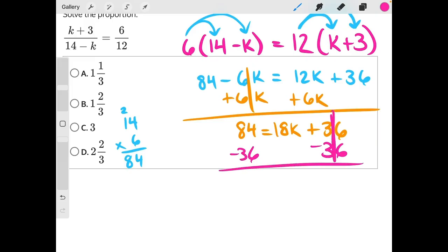These 36s will cancel. We need to borrow: 14 minus 6 is 8, 7 minus 3 is 4, so we have 48 = 18k.